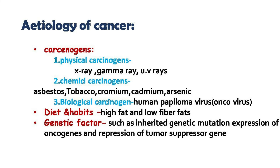The first type is physical carcinogens. Examples of physical carcinogens include X-rays, gamma rays, and UV rays. X-rays and gamma rays come under ionizing radiation, and UV rays come under non-ionizing radiation. These types of radiation can cause cancer.